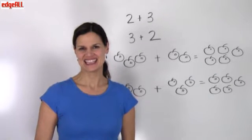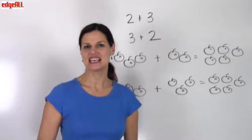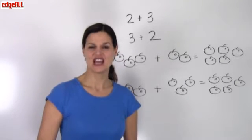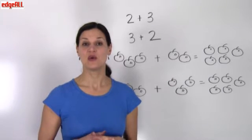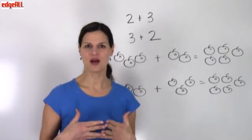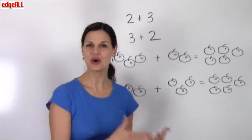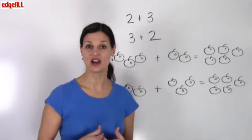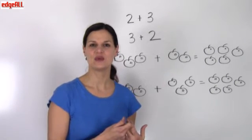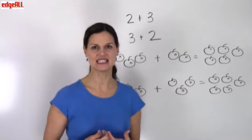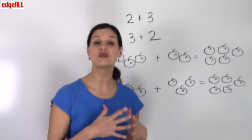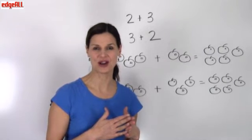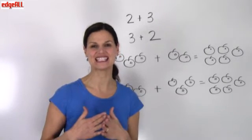What does it mean that addition is commutative? To commute means to move around. When people drive from their home to work, they call that their commute. When we say that addition is commutative, we mean that the numbers can move around in any order without affecting the sum.